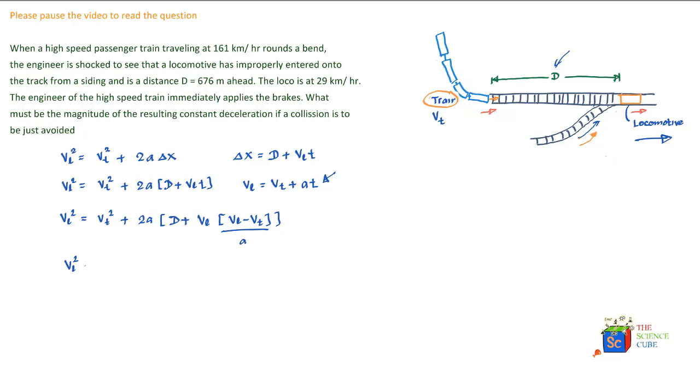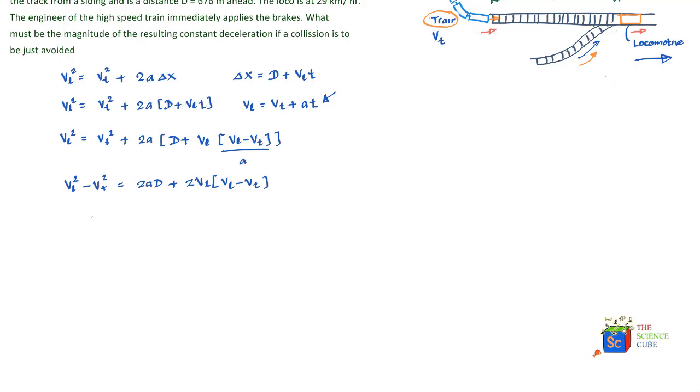If we simplify this whole thing, what we get is vL² - vL² - vT² = 2a·d + 2vL(vL - vT). This simplifies further to -vT² = 2a·d + 2vL(vL - vT).